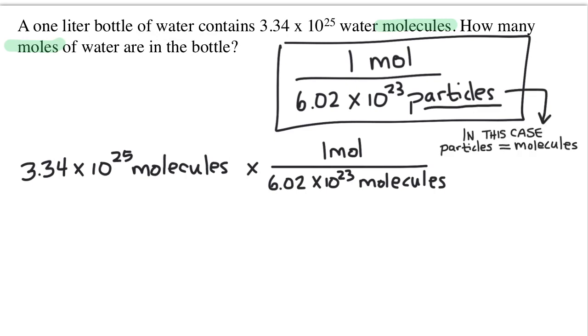When you multiply a number by a fraction that's 1 over something, it's the same thing as dividing that number by whatever's on the bottom. So really we just have 3.34 x 10 to the 25 divided by 6.02 x 10 to the 23.